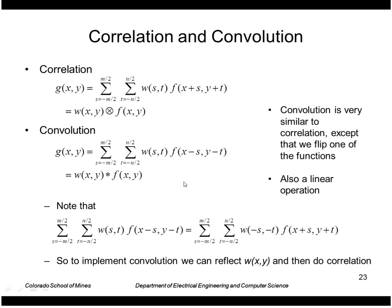And another way to see that is to take the expression for convolution and just change the signs of s. So instead of summing from s minus m over 2 to m over 2, we'll go from m over 2 to minus m over 2, and we'll just flip the sign of s in all places. So this looks exactly like our correlation, except we have a flipped mask here. So to implement convolution, then we can simply reflect our mask around the axes and then do a correlation.